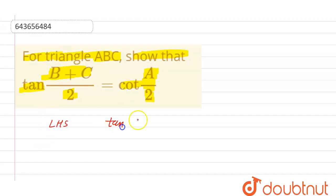So first of all, we should know the sum of all the angles of a triangle is always equal to 180 degrees. If you want to calculate the value of B+C, so we can write it equal to 180 degrees minus A.